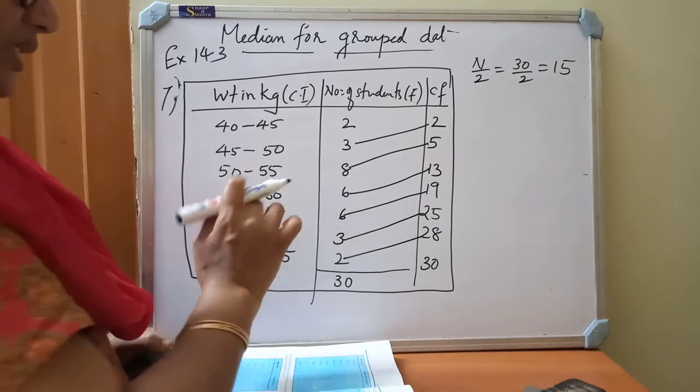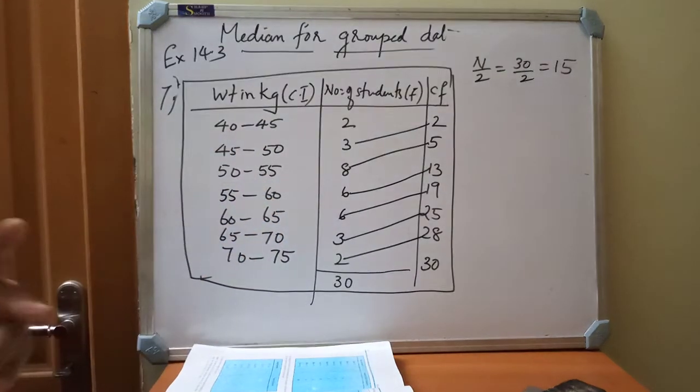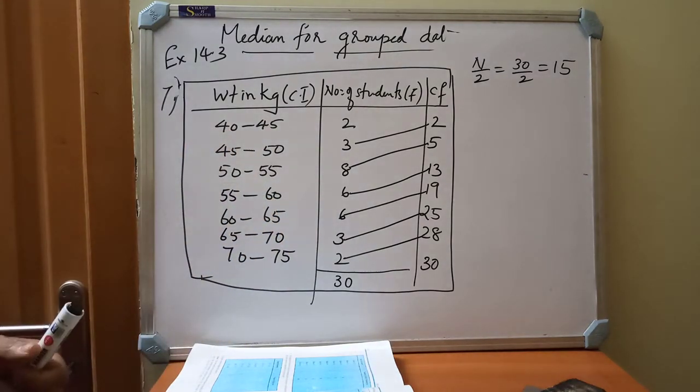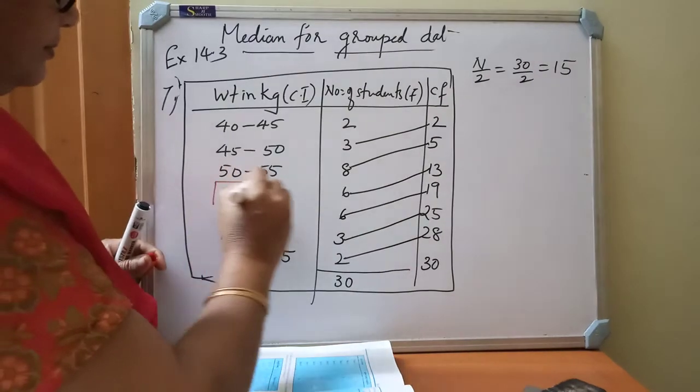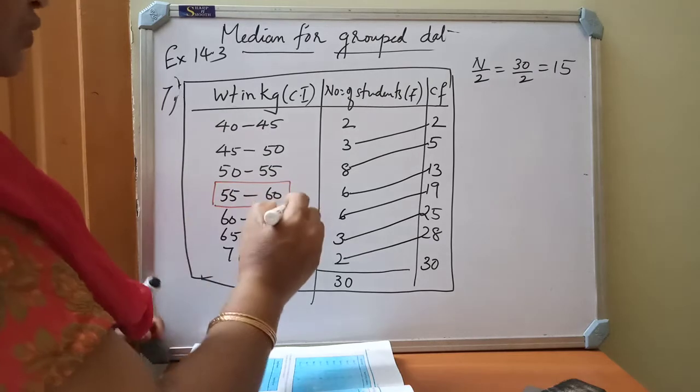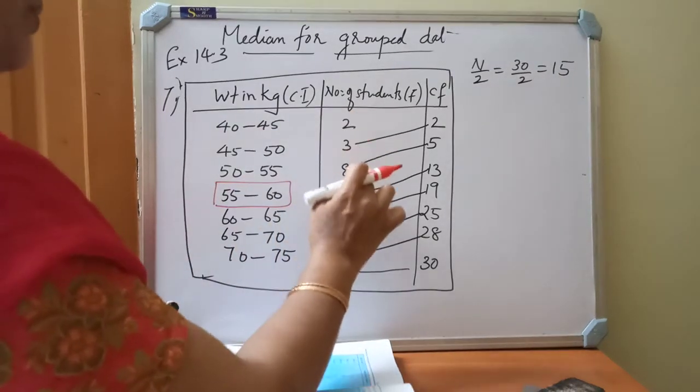So 1, 2, 3, 4. This class interval, that is 55 to 60. This is our median class. So 4th one, 1, 2, 3, 4.